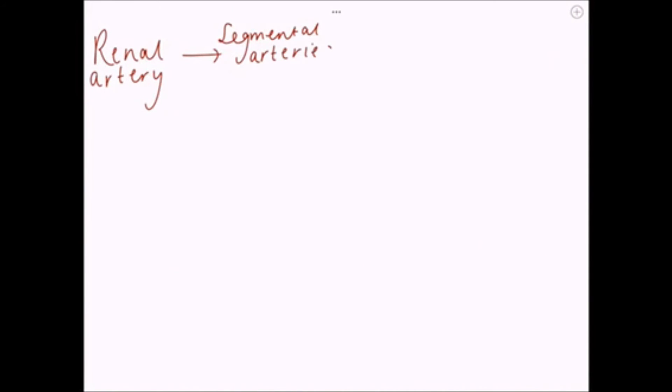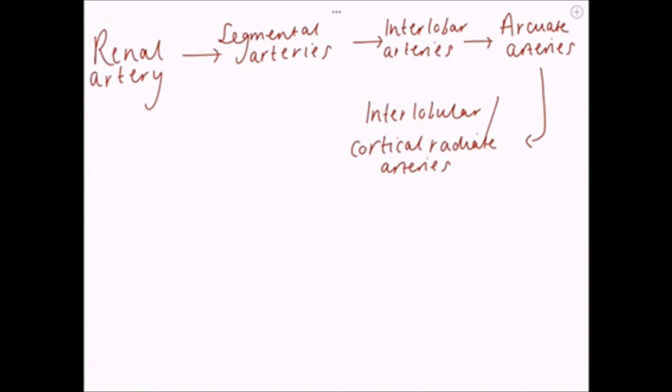So just to summarize, you've got the renal artery, the segmental arteries, the interlobar arteries, the arcuate arteries, going to the interlobular arteries, also known as cortical radiate arteries, the afferent arterioles, the glomerulus where filtration takes place, and the efferent arterioles.